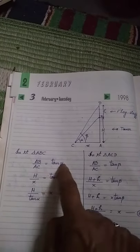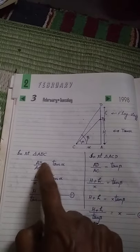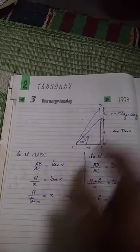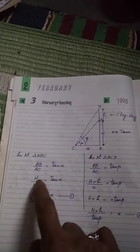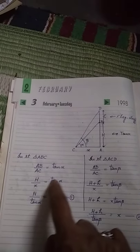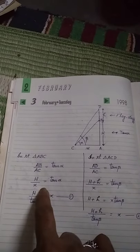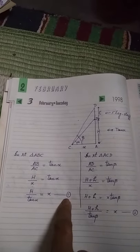Now we will interchange their places. AC is x and AB we have assumed capital H. So capital H by x equals tan alpha. Now taking x to that side and tan alpha in the denominator, x equals H by tan alpha. This is equation number 1.